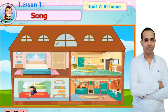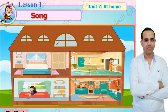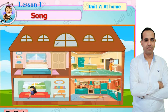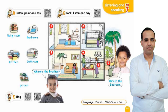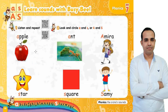Where's Eunice? He's in the bathroom. Can you see? Where's Lina? She's in the living room. Can you see? Where's Lina?